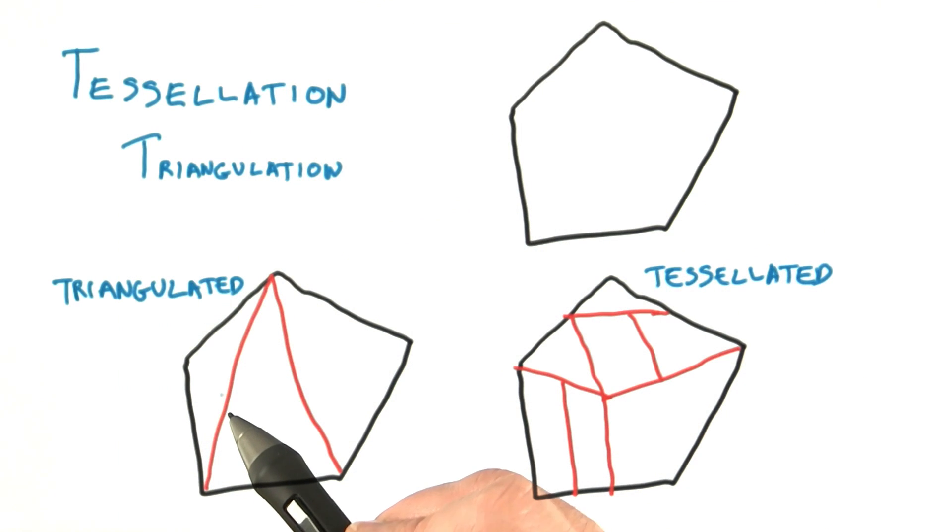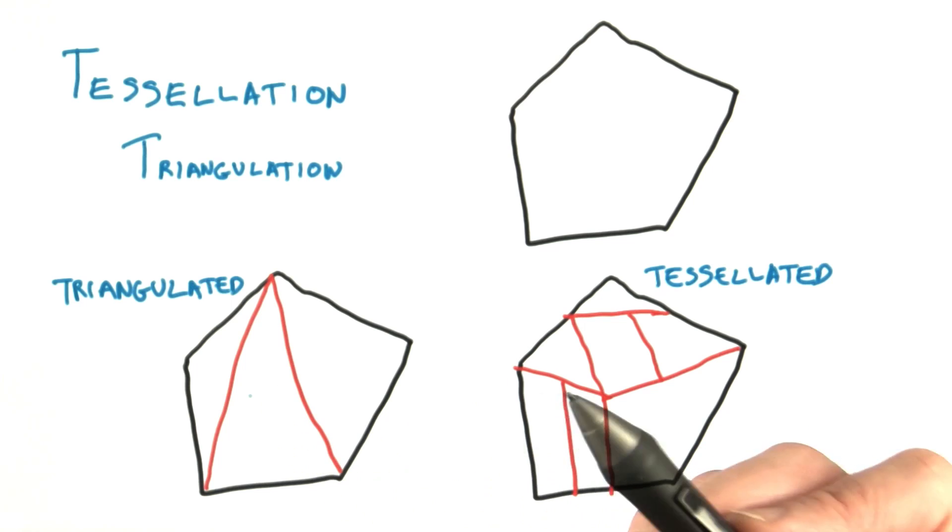When it comes to making surfaces, the GPU understands only triangles. To draw any polygon, we break that polygon into a set of triangles. This process is naturally called triangulation.